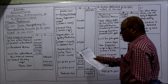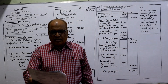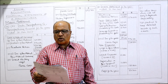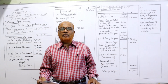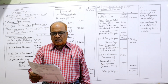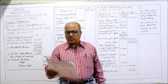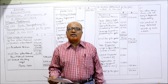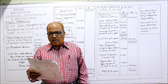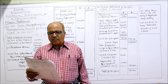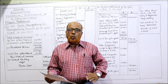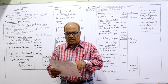Now see the 14th problem. The financial year of Doshi Manufacturing Company ends on 31st January, so every year accounts are closed on 31st January. The following trial balance was extracted from the books on 31st January 2017, so the year ends on 31st January 2017. Inventory on 1st February 2016, beginning of the year — opening inventory of raw material, work-in-progress, and finished goods are given.